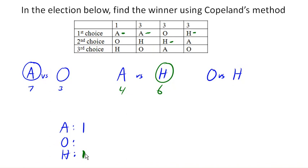Next we'll look at O versus H. These people prefer O, H, O, H. So we got 6 preferring H and 4 preferring O, so H wins here.